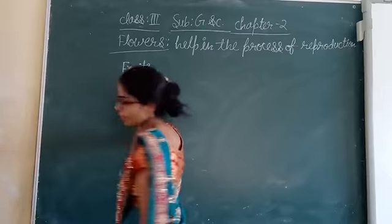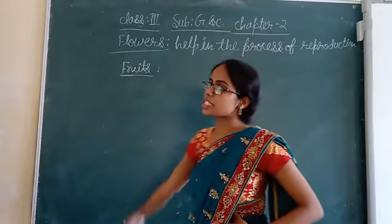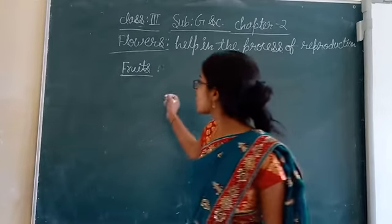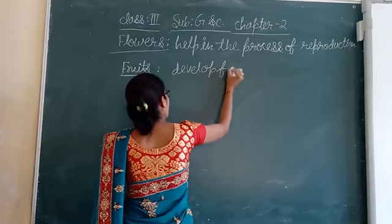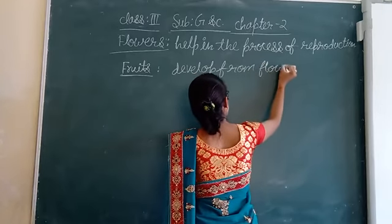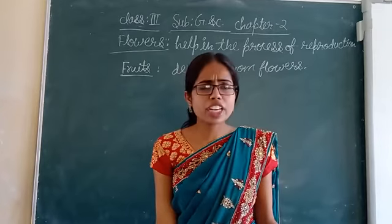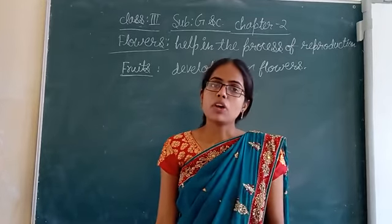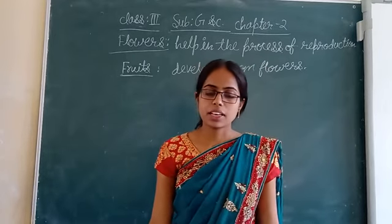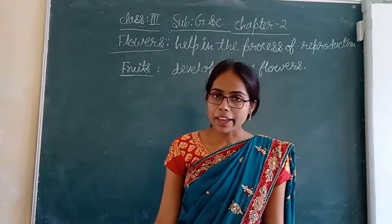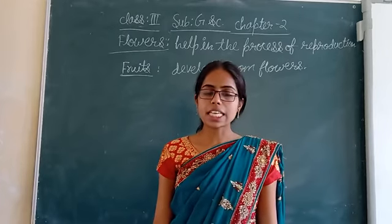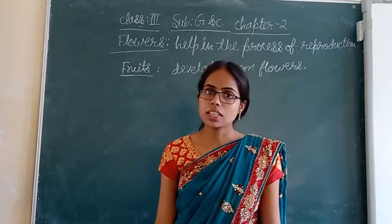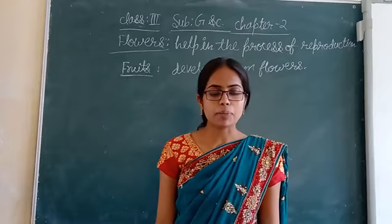Fruits develop from flowers, and there are many different types of fruits which we eat. Fruits have seeds inside them. Fruits can be either fleshy or dry. Mango, banana, papaya, apple, orange, and guava are examples of fleshy fruits. Bean, groundnut, mustard, almond, cashew nut, and raisin are examples of dry fruits.